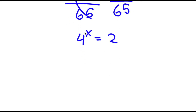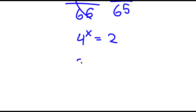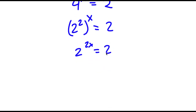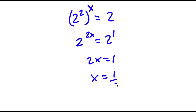Now to solve this, we can tell that x is going to be less than 1, because if you plug in x equals 1, you get 4. So I'm going to rewrite 4 as 2 squared, and now I have 2 to the power of 2x is equal to 2, meaning 2x equals 1, and x is equal to one half.